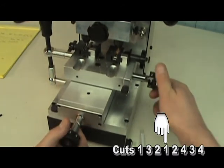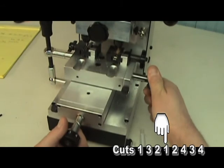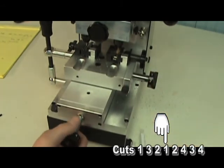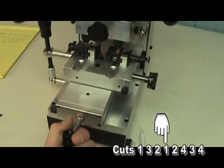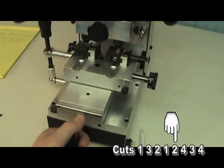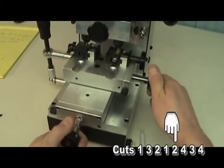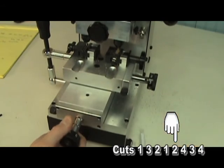In our fourth position, we have a number one depth. So again, we'll turn our depth rod first, then our space rod to the number four position. This time, our next depth is deeper, a number two depth. So we'll turn our space rod first, then turn the depth rod to a number two position.